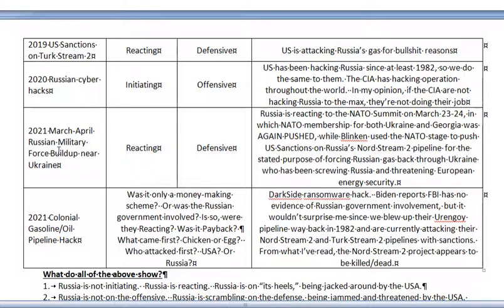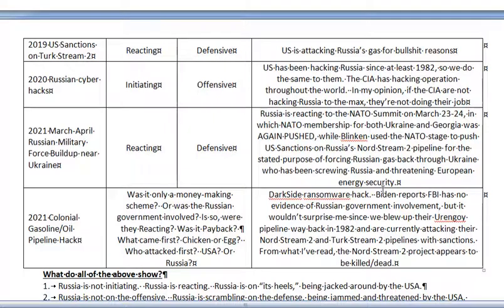2021 March-April Russian military force buildup near Ukraine: Russia was reacting, Russia was being defensive. Russia was reacting to the NATO summit on March 23rd-24th in which NATO membership for both Ukraine and Georgia — like in 2008 — was again being pushed, while Blinken used NATO states to push US sanctions on Russia's Nord Stream 2 pipeline for the stated purpose of forcing Russia to send gas back to Ukraine, who has been screwing Russia and threatening European energy security.